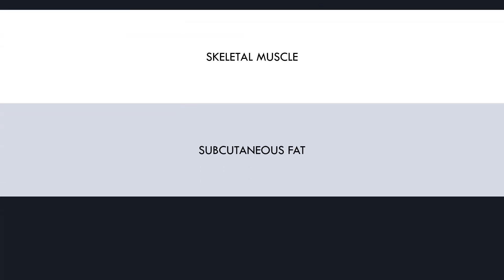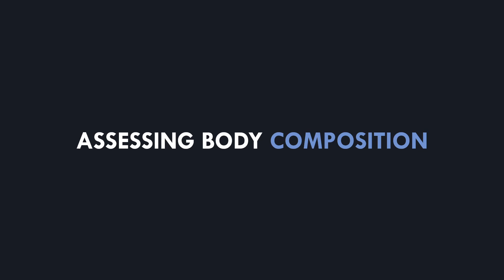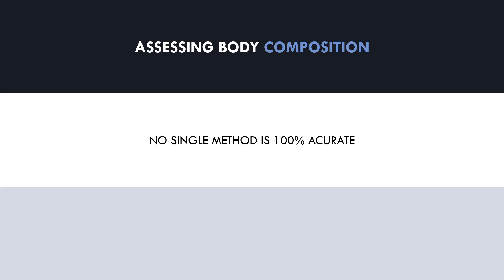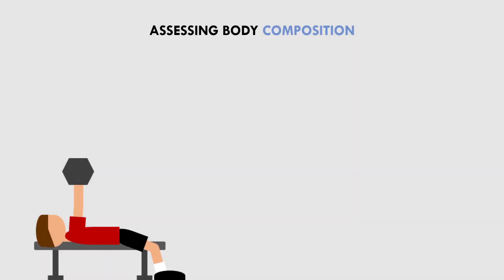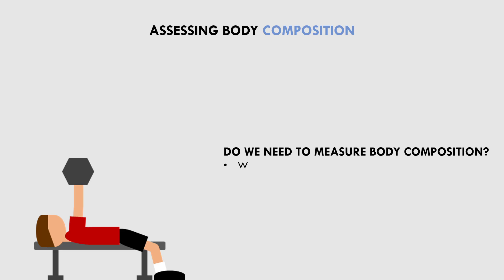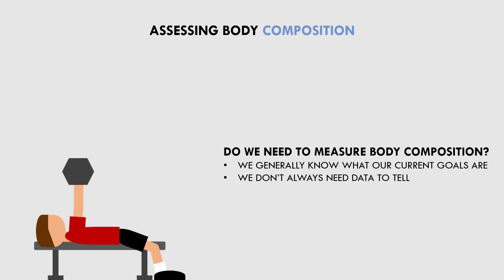So how can we actually assess how much muscle and fat mass we have, and detect changes in these tissues? There are many ways to assess body composition, but no single method is 100% accurate and reliable. A combination of methods can be used to make informed decisions. However, it is also important to discuss why we would want to assess body composition in the first place. We probably don't need much data to realise what our goals are at any given point. If someone wants to gain muscle mass or lose body fat, they will already know that from how they appear and what their current goals are.